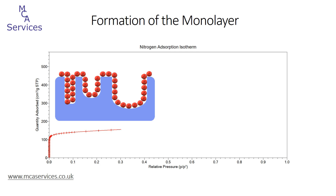As relative pressure increases, the adsorbate will continue to cover the external surface and also the walls of the meso- and macropores with a single layer of atoms. This complete coverage — a layer of adsorbate just one atom thick — is called the monolayer, and it's the volume of this that we are trying to establish when calculating surface area. For many samples, the monolayer is formed within the approximate range of 0.05 to 0.35 relative pressure, but this doesn't mean that this range always applies — we have to assess it for every individual analysis.